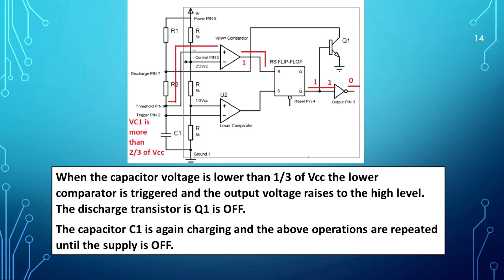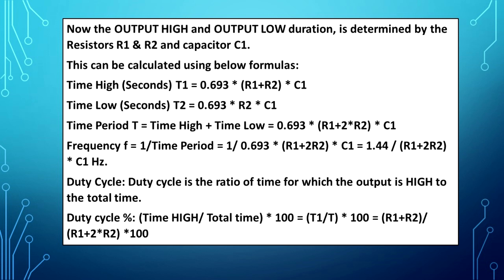The discharge transistor Q1 turns off, capacitor C1 begins charging again, and the above operation is repeated until the supply is off. The output high and output low durations are determined by resistors R1, R2 and capacitor C1, and can be calculated using the following formulas.